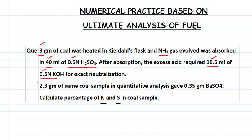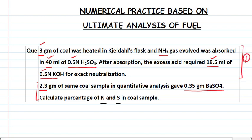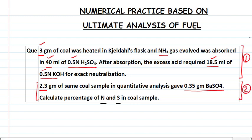The second part of this question gives us 2.3 grams of the same coal sample — the same coal for which we took 3 grams for nitrogen. For sulfur percentage, 2.3 grams of the sample in quantitative analysis gave 0.35 grams of barium sulfate. So we have two different parts: Part 1 is for nitrogen calculation and Part 2 is for sulfur calculation. We use different formulas for each.